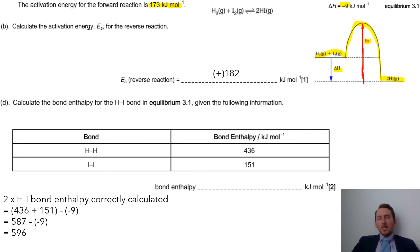So what we do is we do what we normally do, we'd have our 436 plus 151 gives us 587. Normally it'd be minus the value for the products that equals minus 9. But we need a little bit of rearrangement going on, that then gives us 596. But that would be for 2 lots of a H to I bond. We only want 1 lot, so therefore divide it by 2, gives us 298.